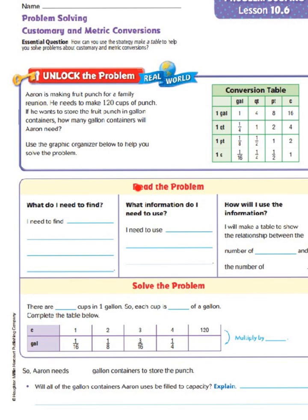Well, let's begin by reading our word problem. Aaron is making fruit punch for a family reunion. He needs to make 120 cups of punch. If he wants to store the fruit punch in gallon containers, how many gallon containers will Aaron need?